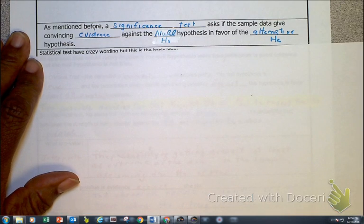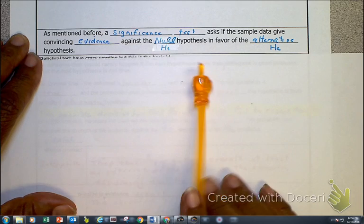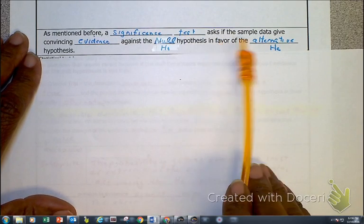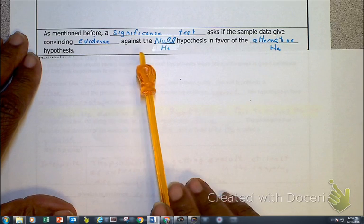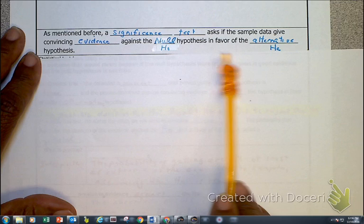As I mentioned before, in terms of statistics, a test of significance asks if the sample data gives us evidence against the null hypothesis, against the status quo, in favor of the alternative.